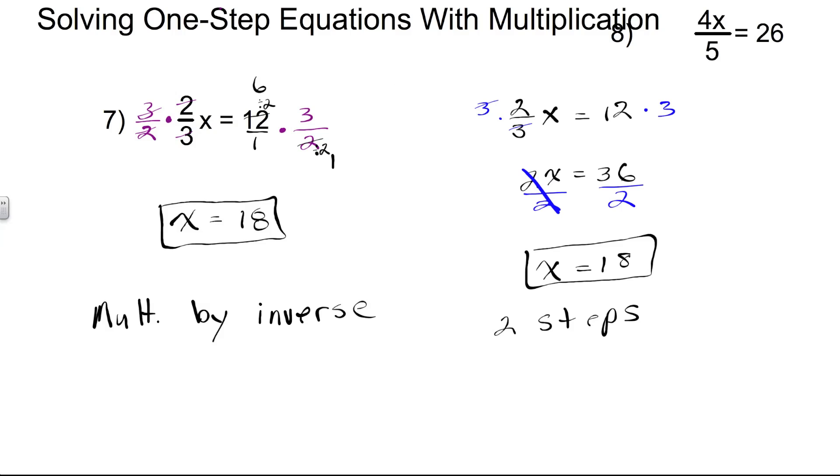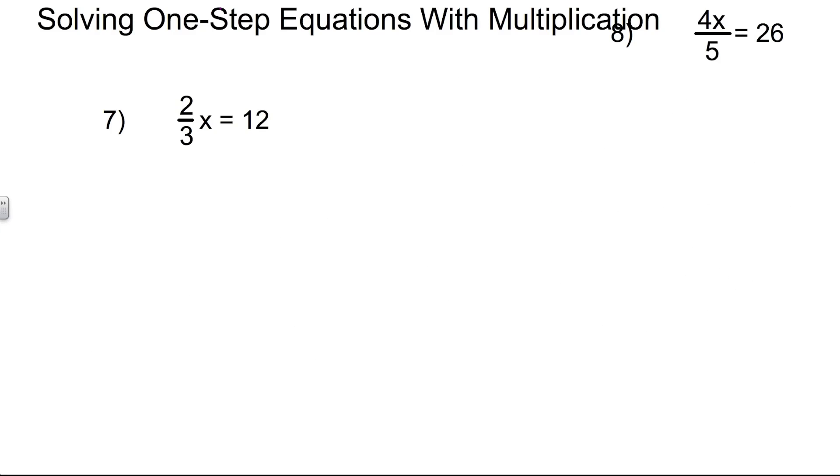Let me show you this other example. It does look a little bit different, but it really isn't much different. Take a look at this example 8. It's actually pretty easy. We can do it with one step since we have 4x over 5. We can multiply both sides by the reciprocal of 4 fifths, which would be 5 over 4. Using the multiplication property of equality, we multiply both sides by 5 over 4. The 5's divide out on the left-hand side. The 4's divide out on the left-hand side, isolating our variable of x.